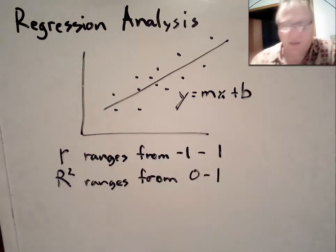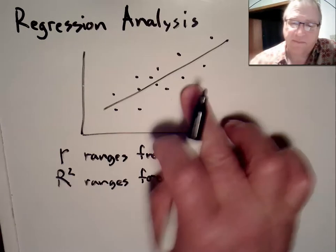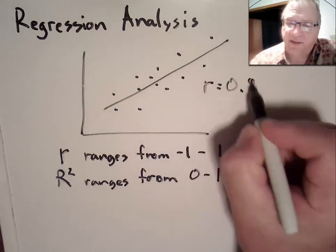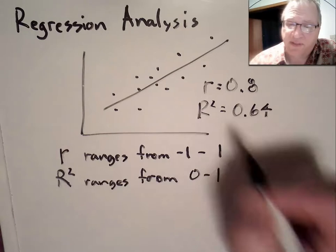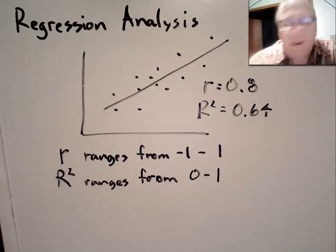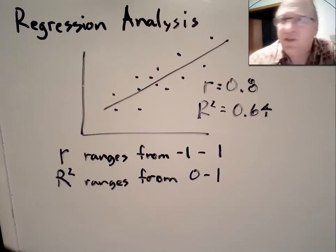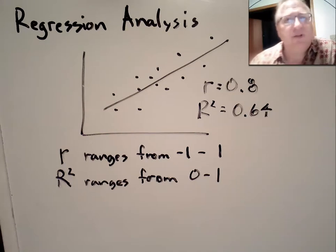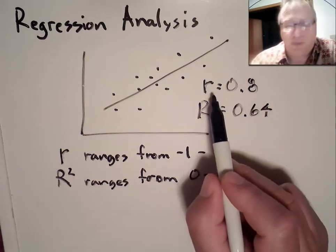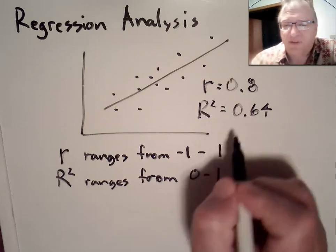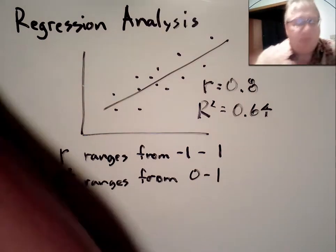Let's pretend we have a real data set with r equal to 0.8. If I square that, I get 0.64 for a coefficient of determination. This week I want you to not just state what the correlation coefficient and coefficient of determination are — I want you to interpret them.